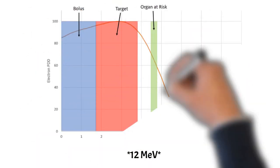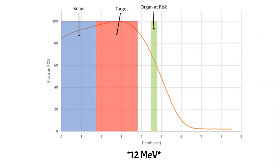So another thing we could do is we could use bolus. So if we place a bolus on the skin, that would shift the target to this position on the PDD and the organ at risk to this position. So the target would be getting a full dose, and the organ at risk would be getting a lower dose. This is just an example of how we can use bolus to shift the PDD curve.